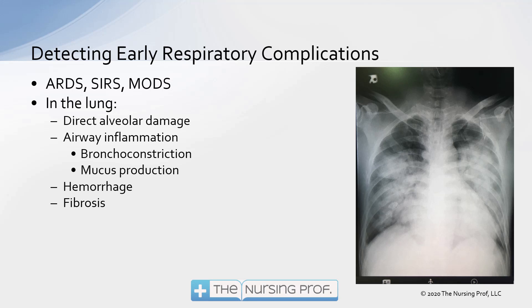Remember we talked about respiratory compliance — if we have bronchoconstriction and mucus production, we're going to have problems with good lung compliance. Compliance is that elasticity piece, so if we're bronchoconstricted and have a lot of mucus in there, it's not going to be very elastic. We also see hemorrhage and lastly fibrosis. Remember, when there's damage anywhere you're going to get scar tissue — so fibrosis will occur. Even after these patients recover, there's going to be a long period where they might be short of breath and tired because they have fibrotic tissue in the lung instead of normal healthy lung tissue.